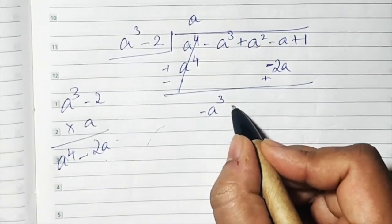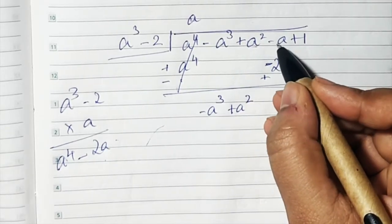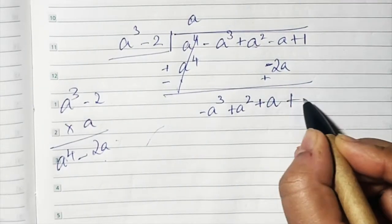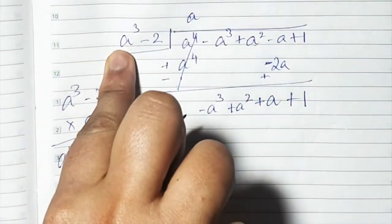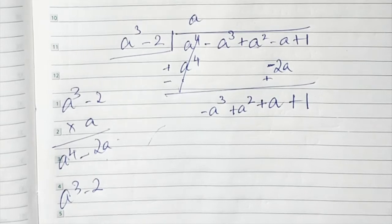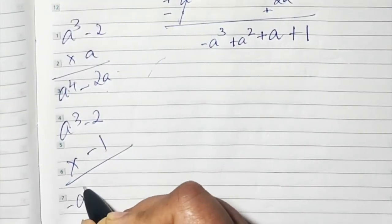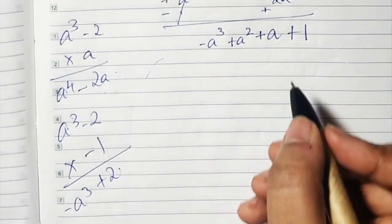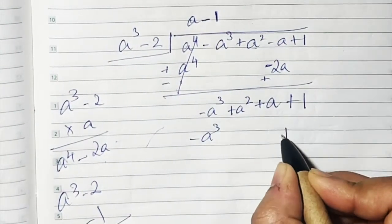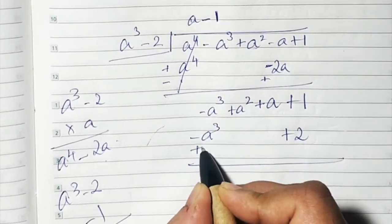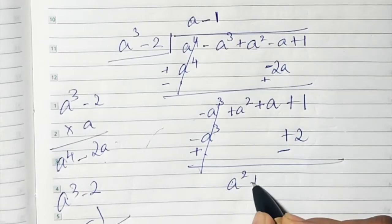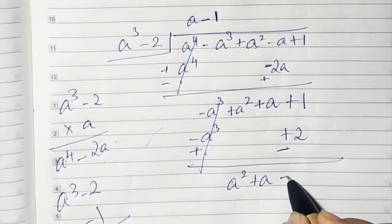So a⁴ - 2a is written below. Signs change: minus becomes plus. a⁴ cancels. Bring down -a³, +a², -a; and -1 + 2 = +1, giving +a. So we now have -a³ + a² + a + 1... that is +a. Now a³ and a³ match, so multiply a³ - 2 by -1: giving -a³ and +2. Write -1 in the quotient. Signs change: minus and plus. -a³ and +a³ cancel.